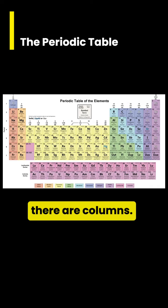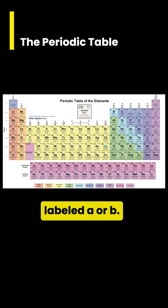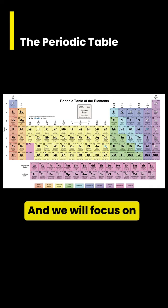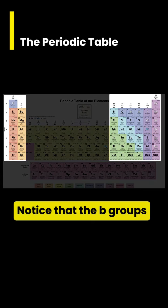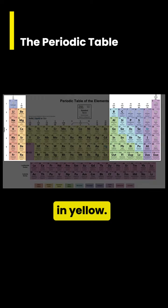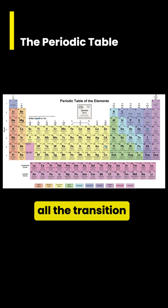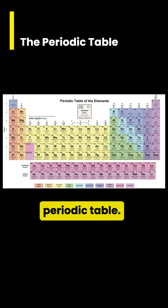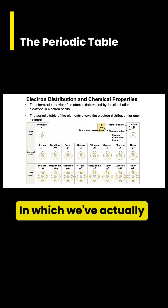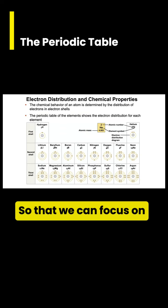Finally, there are columns, and you will see them labeled A or B. These columns are called groups, and we will focus on groups 1A through 8A. Notice that the B groups in yellow are all the transition metals, and we don't really deal with them in this course. Later on in the lecture, we will be using an abridged version of the periodic table, in which we've actually removed the B groups so that we can focus on the A groups.